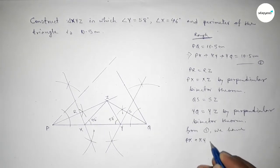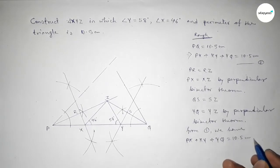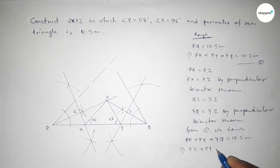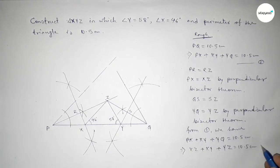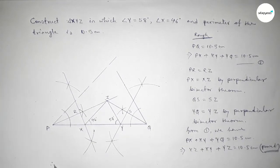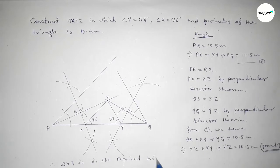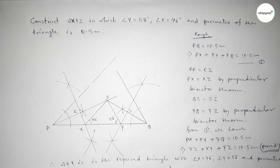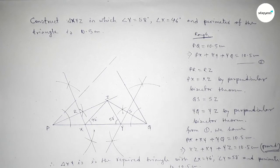From relation one: PX plus XY plus YQ equals 10.5 centimeters. Replacing PX with XZ and YQ with YZ, we get XZ plus XY plus YZ equals 10.5 centimeters. Therefore triangle XYZ is the required triangle with angle X equal to 46 degrees, angle Y equal to 58 degrees, and perimeter equal to 10.5 centimeters. That's all — thanks for watching, please share it with your friends.